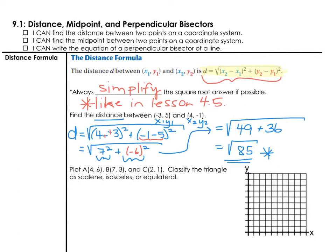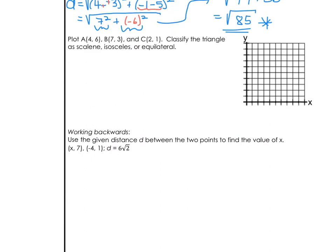Let's see now how we can utilize the distance formula to answer a different kind of question. Plot A, B, and C. A is at (4, 6), B is at (7, 3), and C is at (2, 1). Go ahead and plot those three coordinates over on the right and connect them to create a triangle. Then, we will classify the triangle as scalene, isosceles, or equilateral.